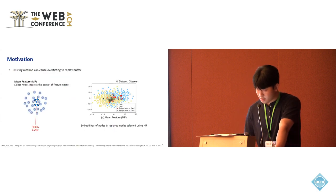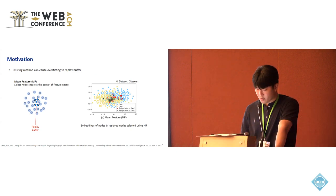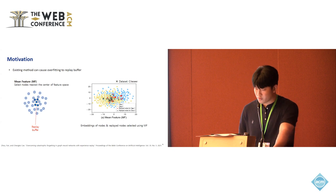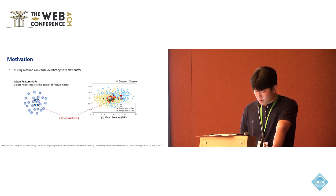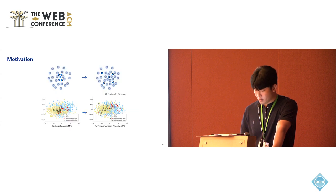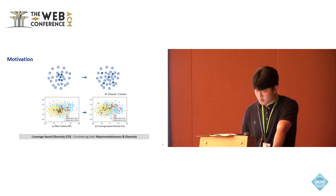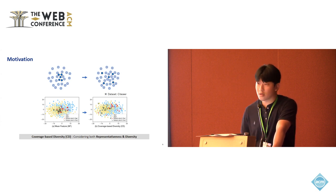The existing state-of-the-art method employs a mean feature approach, which selects nodes close to the center in the embedding space, like these two figures. However, these methods tend to induce overfitting as they only select nodes from narrow regions. Therefore, we aim to select the replay buffer for considering both representativeness and diversity. As a result, our model exhibited a more even selection from various regions, unlike the existing methods that tend to select node clusters in local regions.